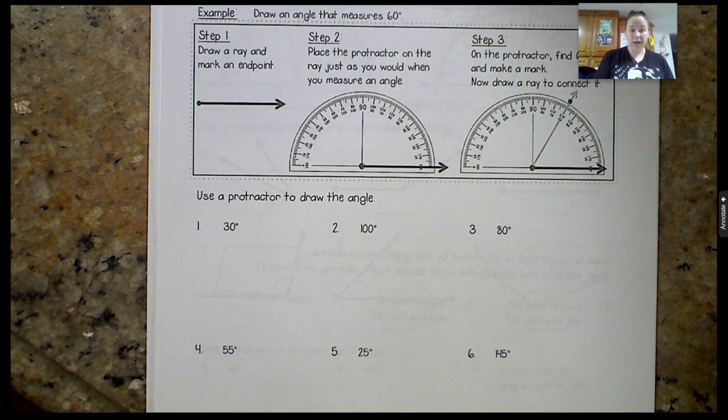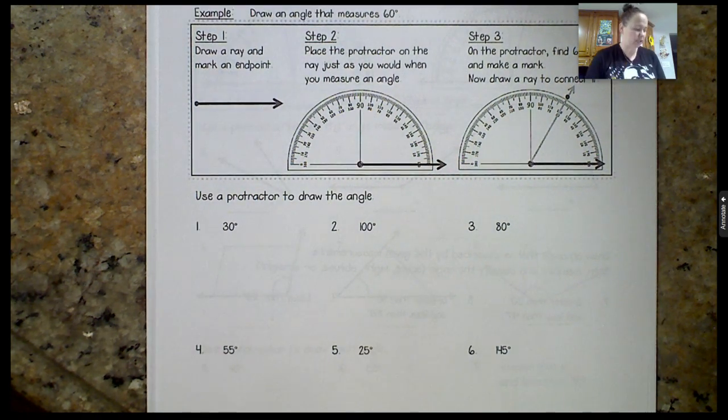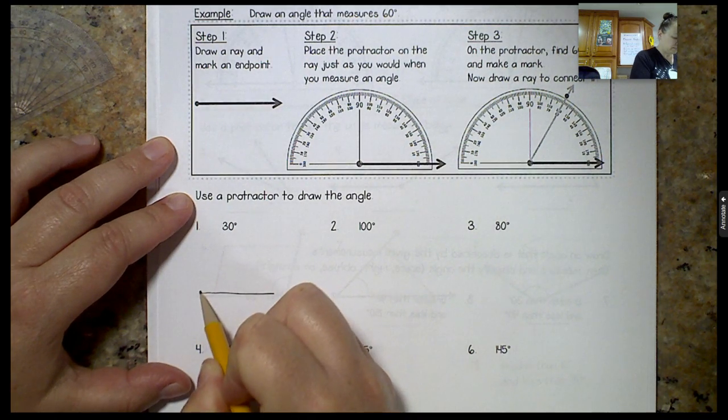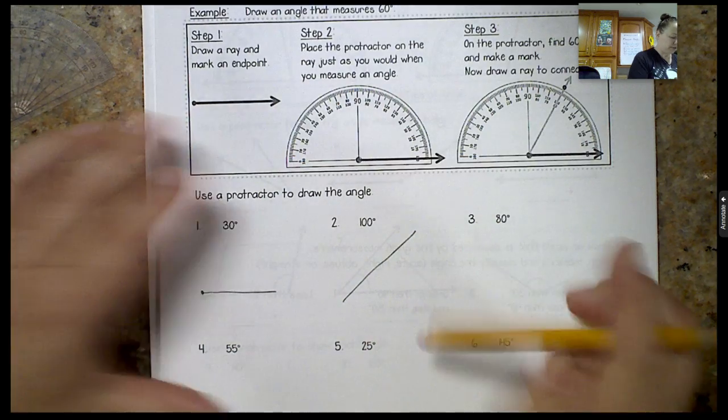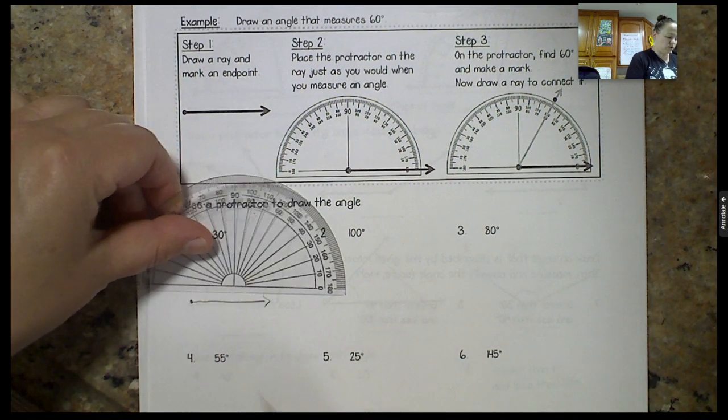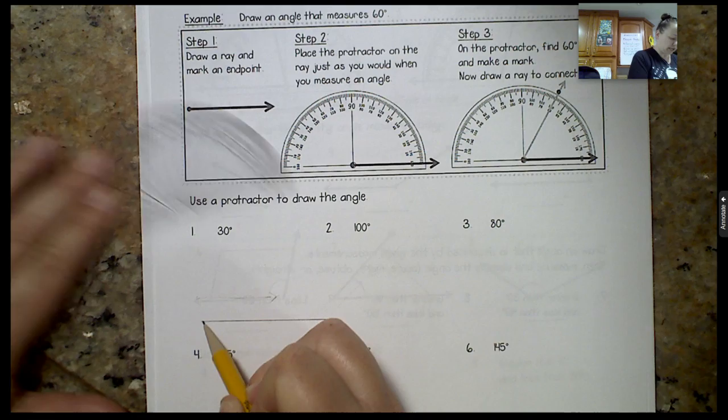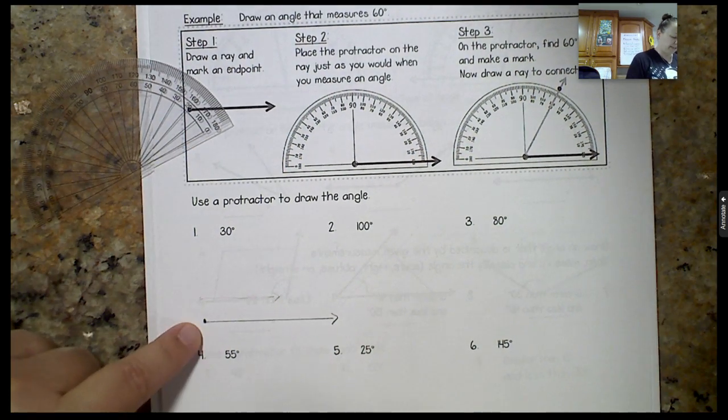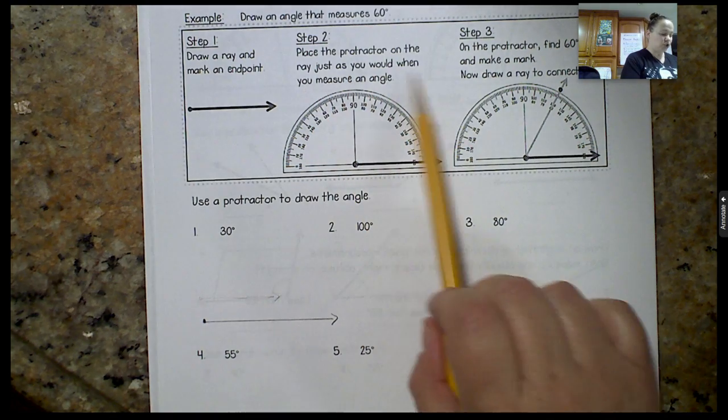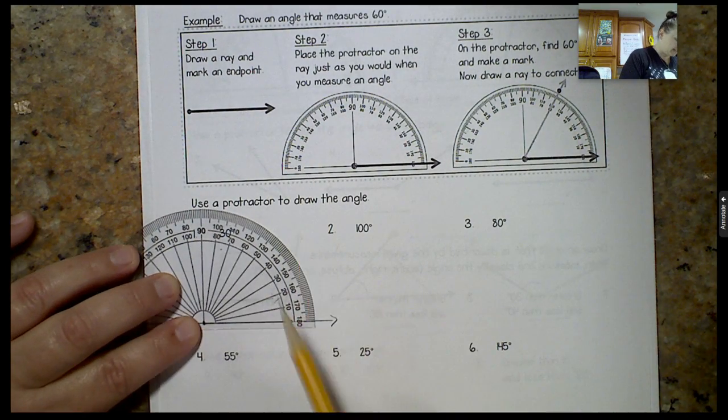Here we go. Step 1, draw a ray and mark an endpoint, which will become our vertex. They want me to do a 30 degree angle. I'm going to draw a ray. I like to make them flat. You could draw one like this if you wanted, that's perfectly fine. But for me, I think it's easier to do it this way. If you also want to be super neat, I could have drawn the ray using the side of my protractor as a ruler. There's my vertex or endpoint. Step 2, place the protractor on the ray just as you would to measure an angle. I'm going to line up my vertex with the endpoint and the zero mark.